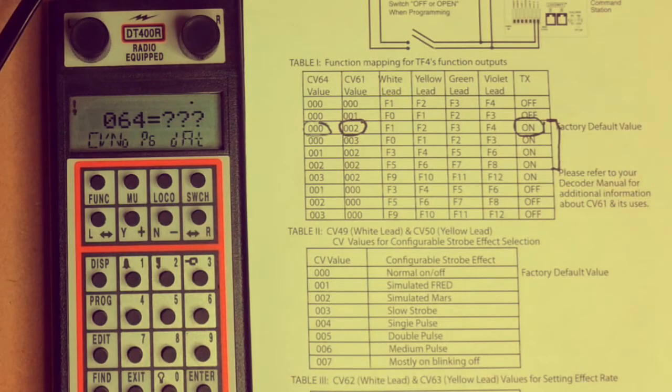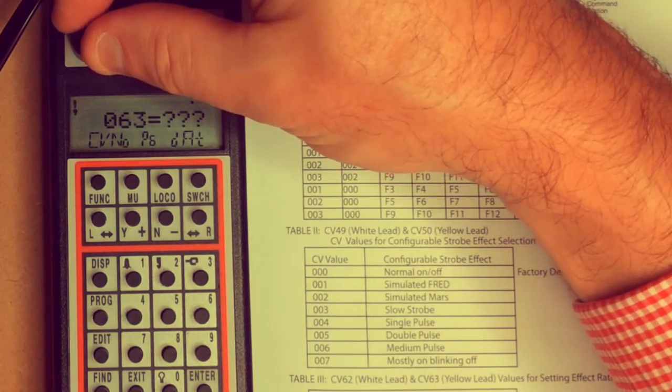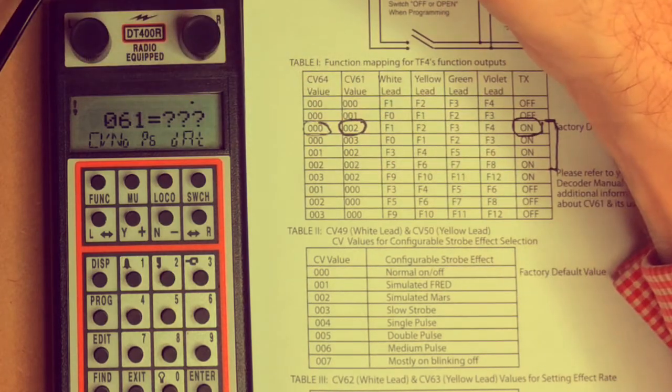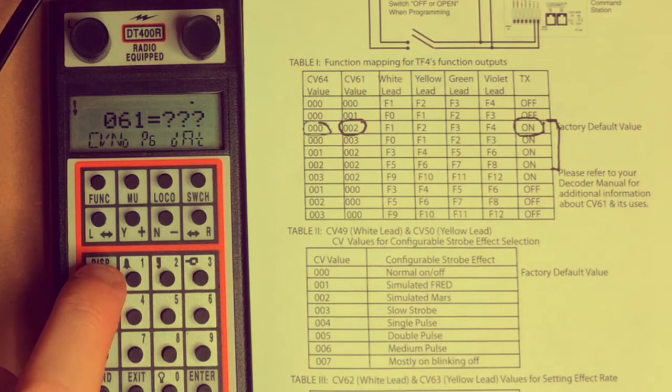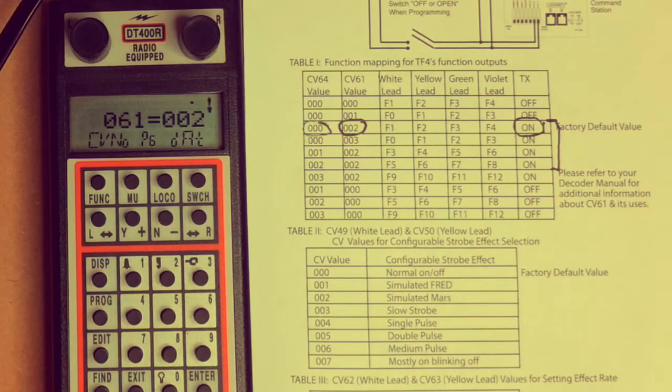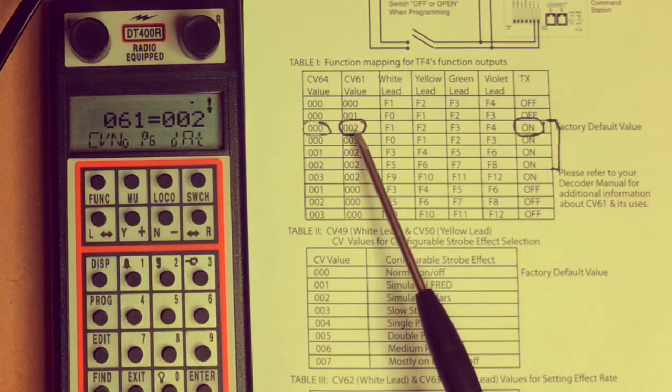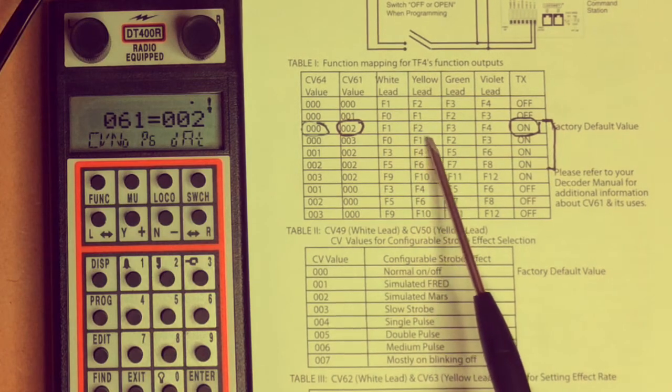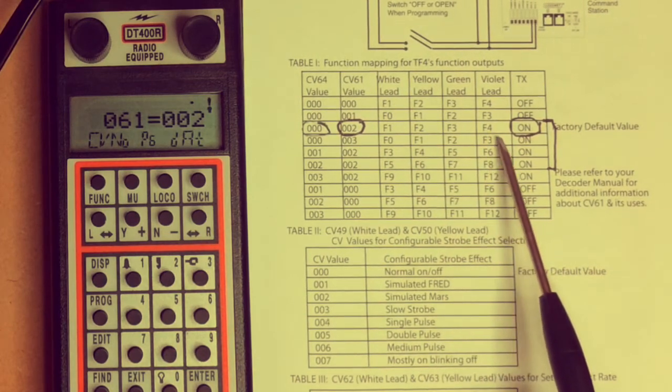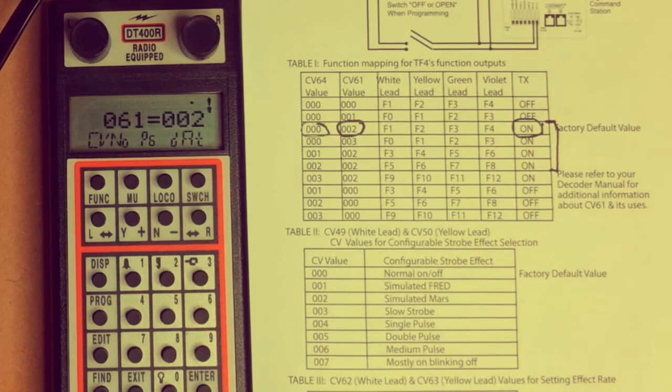Let's have a look at CV61. Let's dial up CV61 here. Here's CV61. Let's read what it says by pressing the Display—it's showing 002. 002 is what we want. That gives us function 1, function 2, function 3, function 4, and transponding on. That's what we want for this decoder, so there's no additional programming we need to do here.